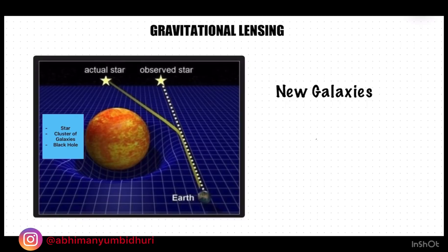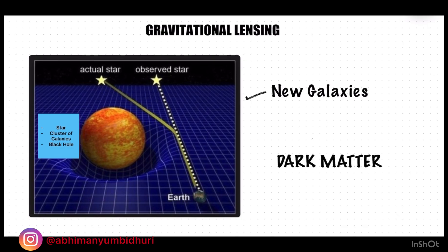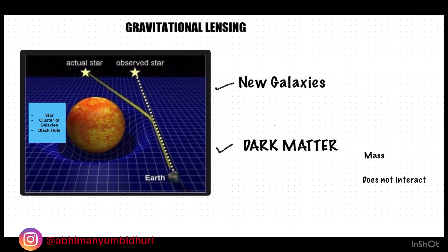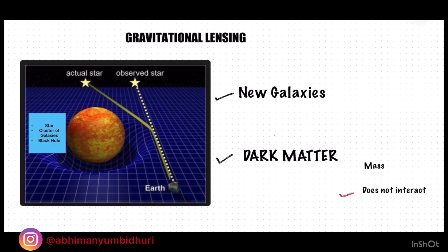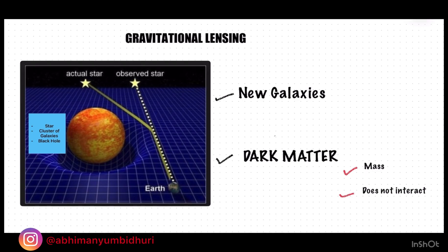With the help of gravitational lensing, we have been able to discover not only many previously unseen galaxies, but it has also helped us detect mysterious things in the universe that we cannot see, like dark matter. Unlike normal matter, dark matter does not interact with the electromagnetic force — it does not absorb, reflect, or emit light, making it extremely hard to spot. Although it is invisible to our eyes, since it has mass, it also bends light that comes close to it just like ordinary matter. In fact, researchers have been able to infer the existence of dark matter only from the gravitational effect it seems to have on visible matter.